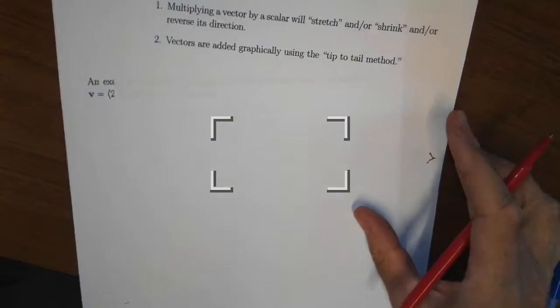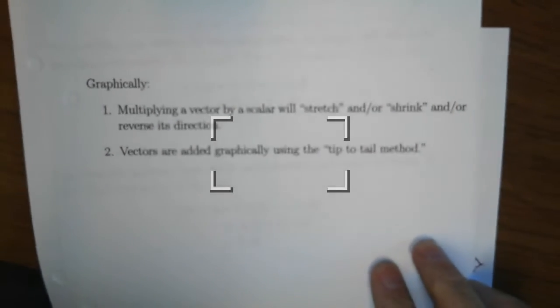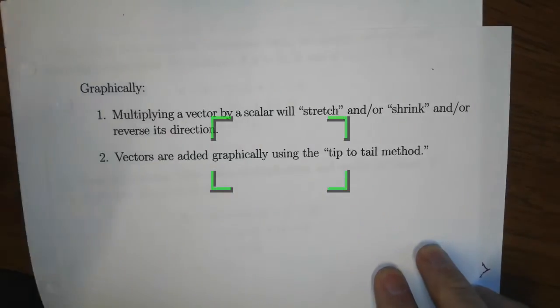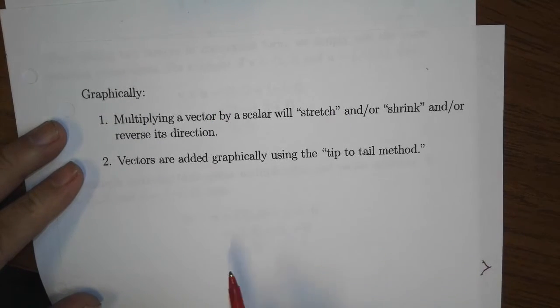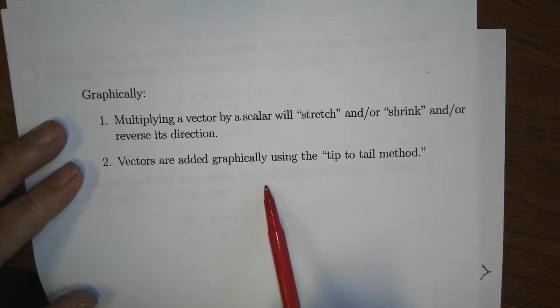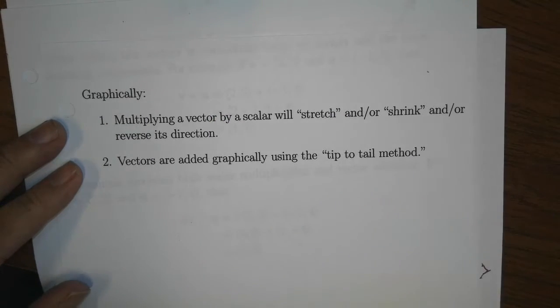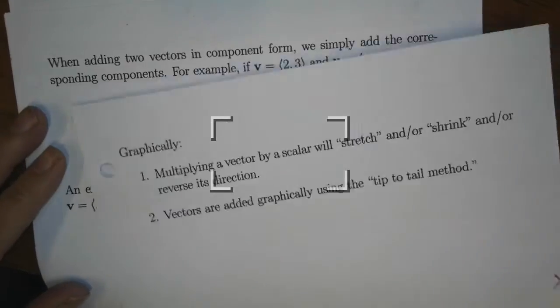To summarize: multiplying a vector by a scalar will stretch or shrink it and can reverse its direction. Vectors are added graphically using the tip-to-tail or parallelogram method.